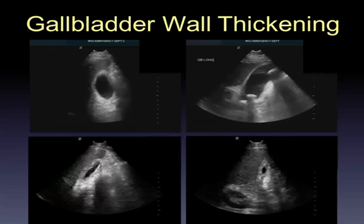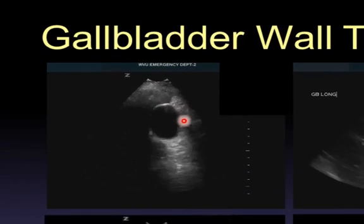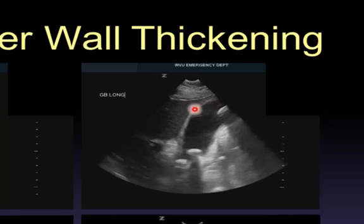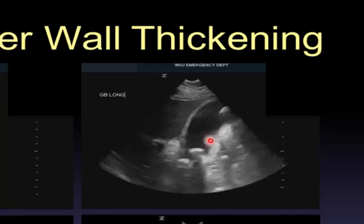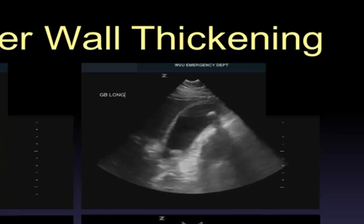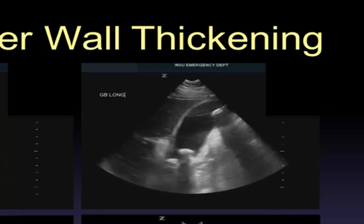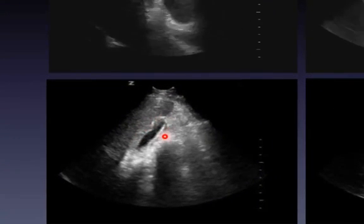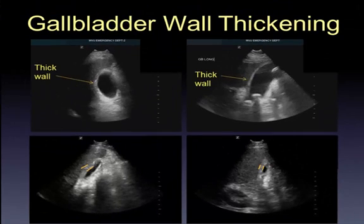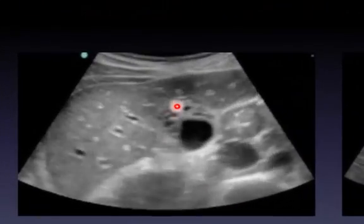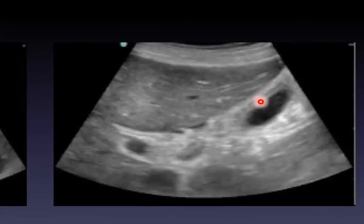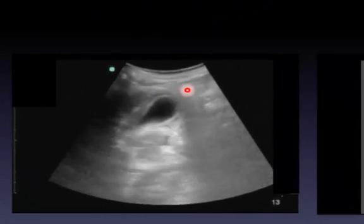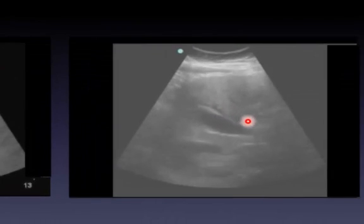Moving on to more specific findings in cholecystitis: gallbladder wall thickening. As you scan towards the neck you can see thickening around the wall — it loses its bright white distinction. Always measure the wall anteriorly, because bowel gas and enhancement can interfere with the posterior borders. A measurement of 3 to 4 millimeters is considered abnormal, though in cholecystitis it tends to be closer to 5 or 6 millimeters. You may also see a double-stripe appearance where fluid and edema are within the wall itself. Pericholecystic fluid — fluid wrapped around the outside of the gallbladder wall — is another finding of cholecystitis.